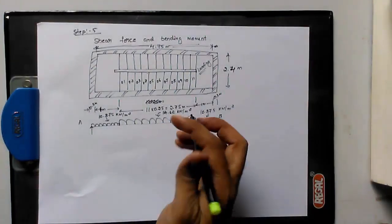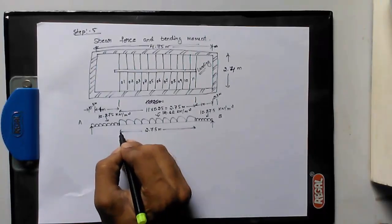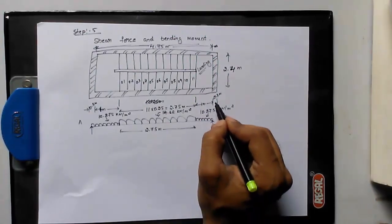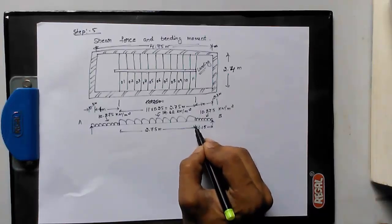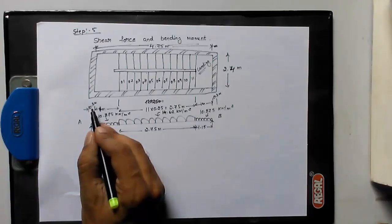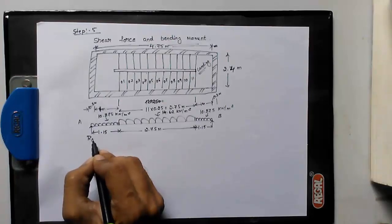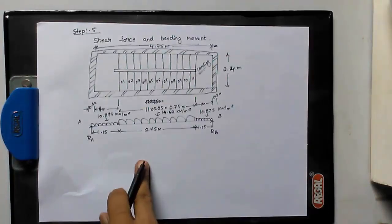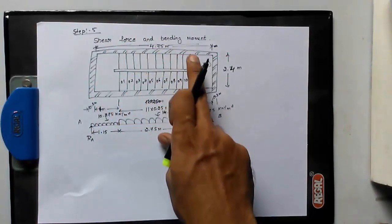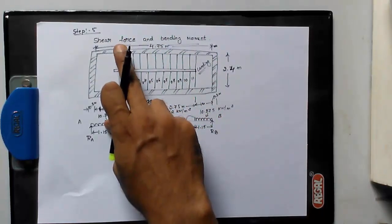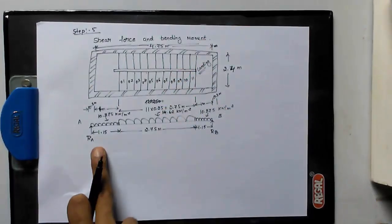The total UDL distance for steps is 2.75 meters. The landing distance is 1 meter plus half the wall thickness (0.3/2 = 0.15), giving 1.15 meters on each side. We have reaction RA and RB. We need to find the maximum shear force and maximum bending moment by first finding the reactions at A and B.